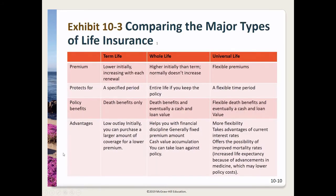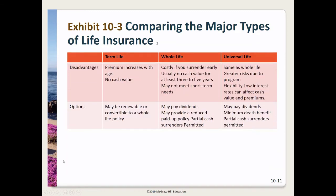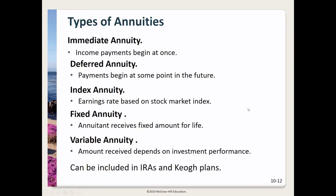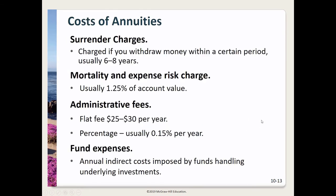The slides include a helpful exhibit comparing the major types of life insurance: term, whole life, and universal life, with characteristics, disadvantages, and options for each. There's also a summary of different types of annuities and their costs. In addition to surrender charges and mortality and expense risk charges, be aware of other administrative fees and underlying fund expenses when evaluating annuities.